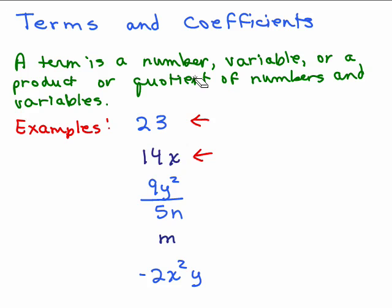So a term is a number, a variable, or a product or quotient of numbers and variables. For example, 23, that's just a number. Down here the fourth one I have m, that's just a variable. And the rest of these are either products or quotients with some numbers and variables.